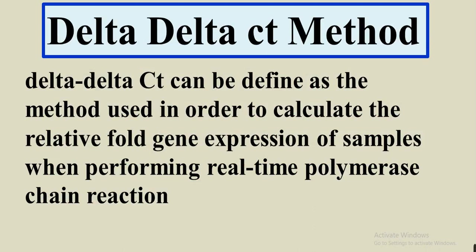The delta-delta CT method is very important for calculating the expression of our gene. It can be defined as the method used to calculate the relative fold gene expression of a sample when performing real-time PCR. It gives us the expression in terms of fold change — how many fold changes our gene is expressed compared to a control or treatment.